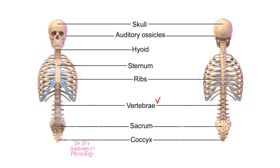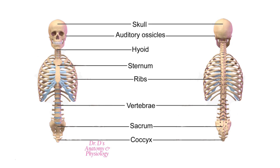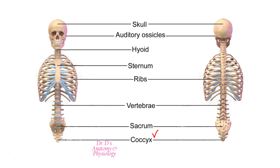The axial skeleton also includes all the vertebrae — the cervical, thoracic, and lumbar vertebrae — the sacrum, which represents fused vertebrae, and the coccyx, the tailbone, which also represents fused vertebrae.